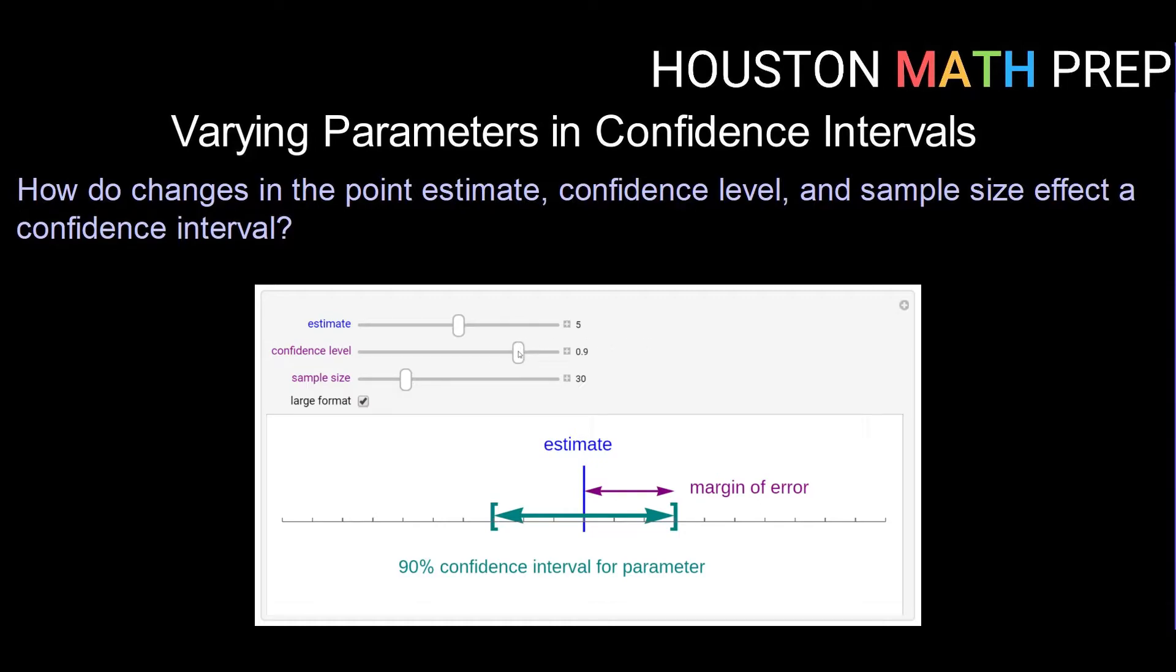So let's look first at what happens if we get less confident. So if I drag my slider down and now I'm 85% confident and then a little further down becoming 78% confident, what we notice is that our interval becomes narrower.